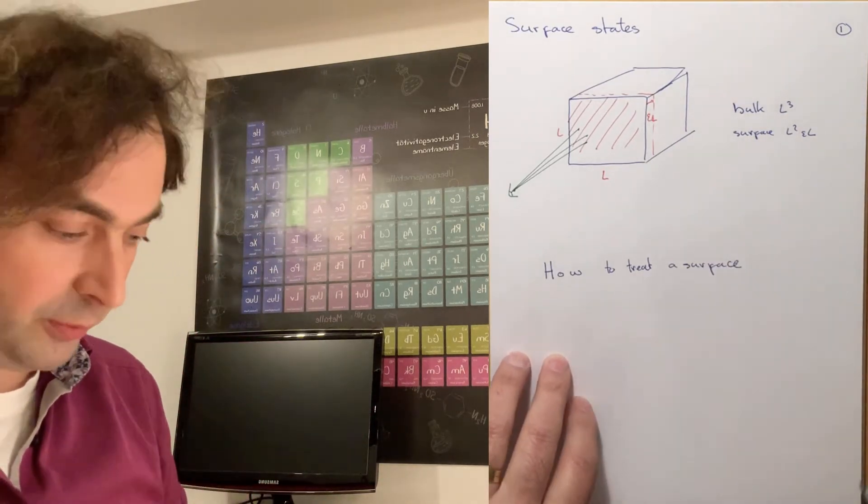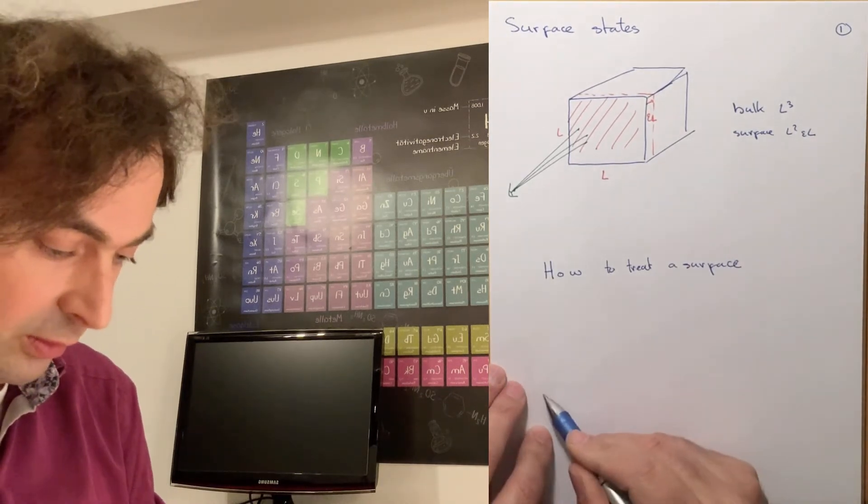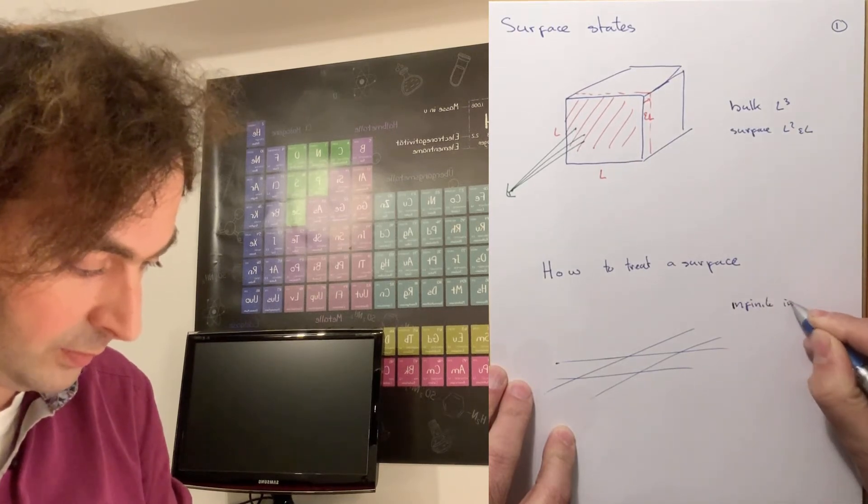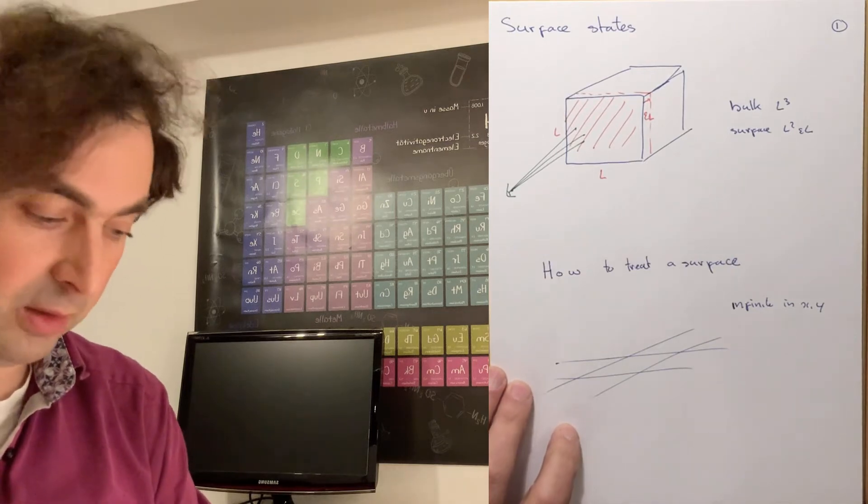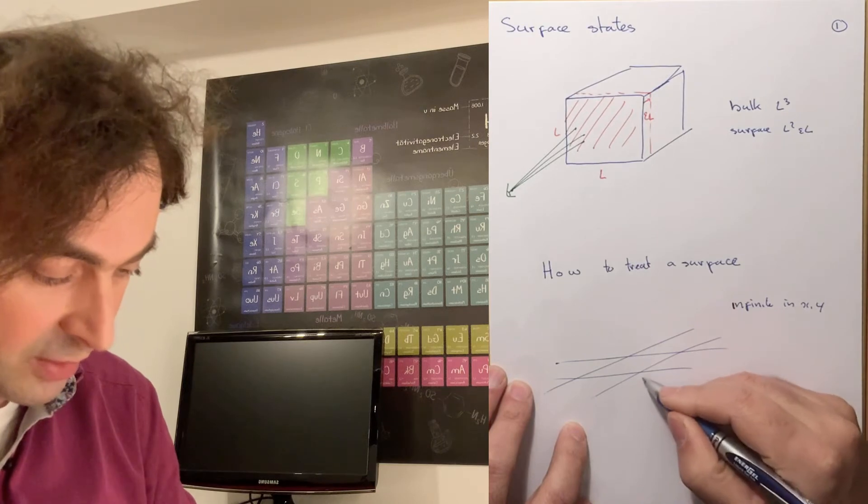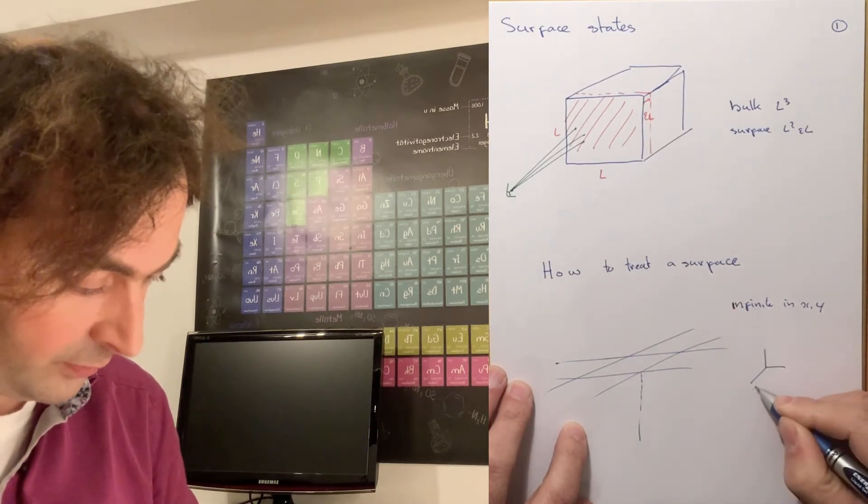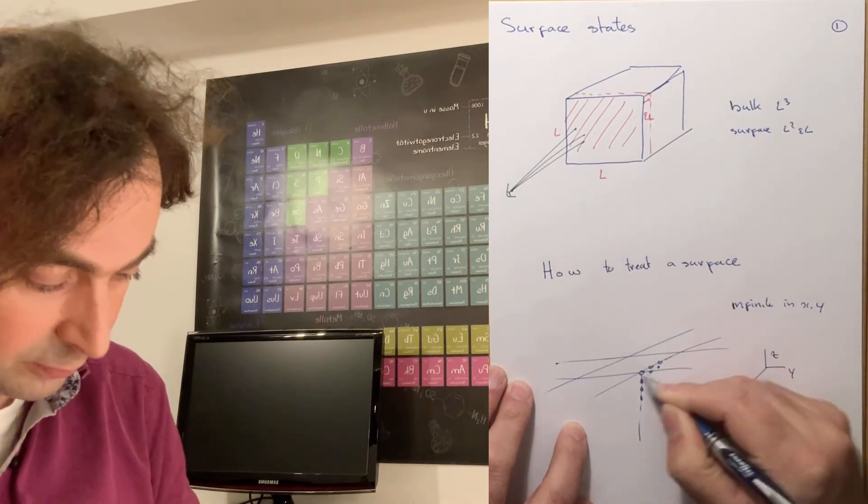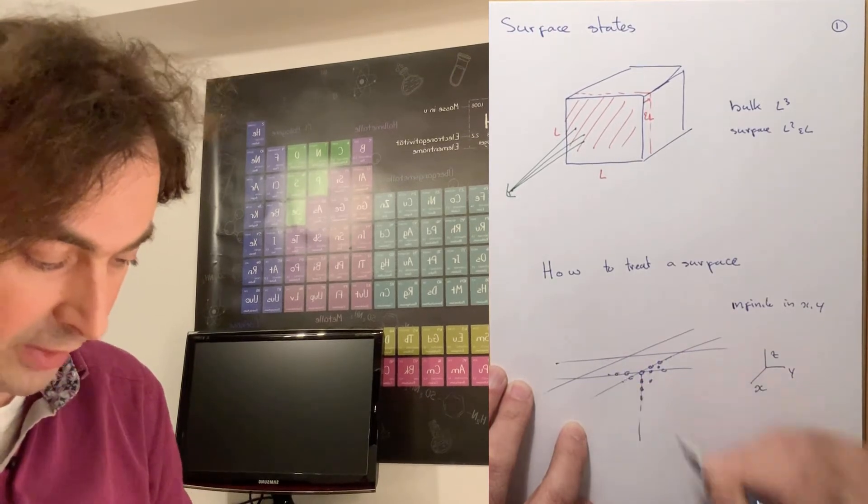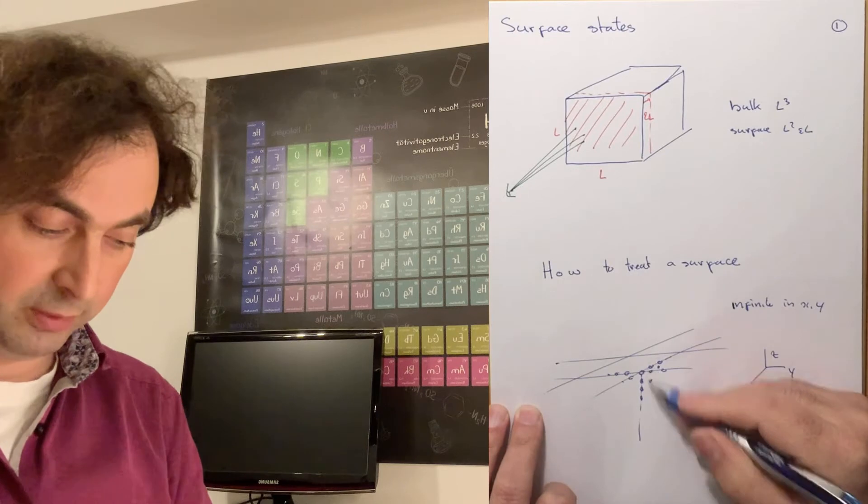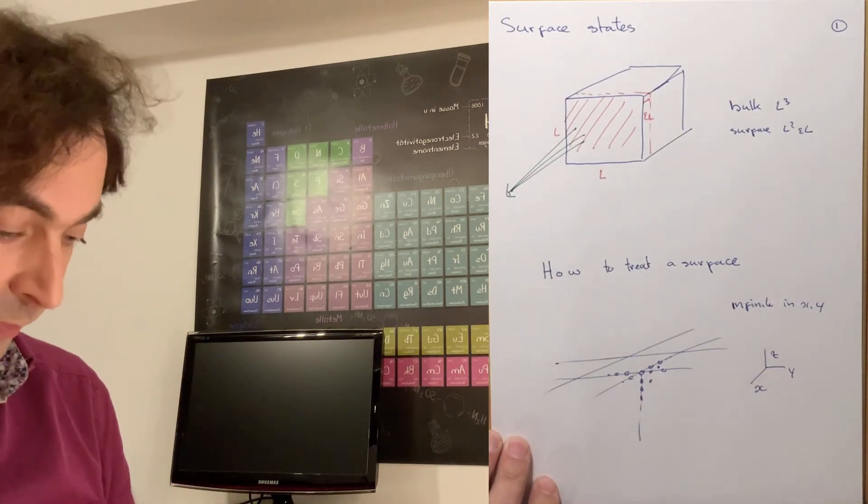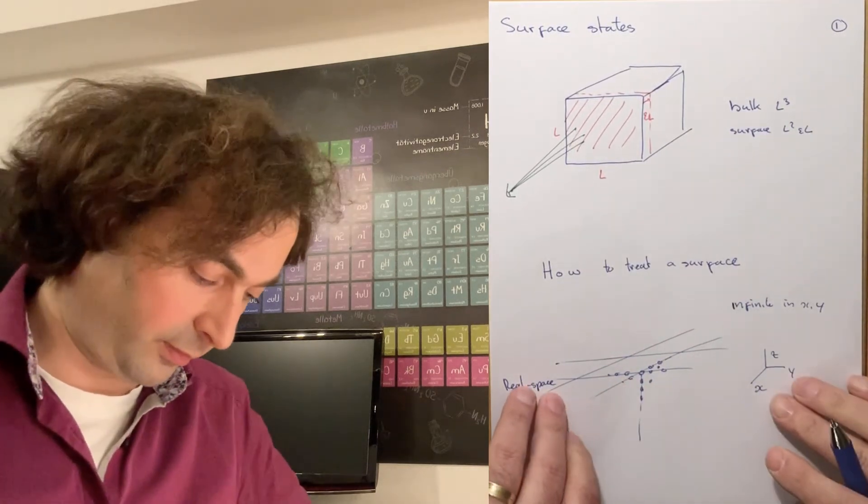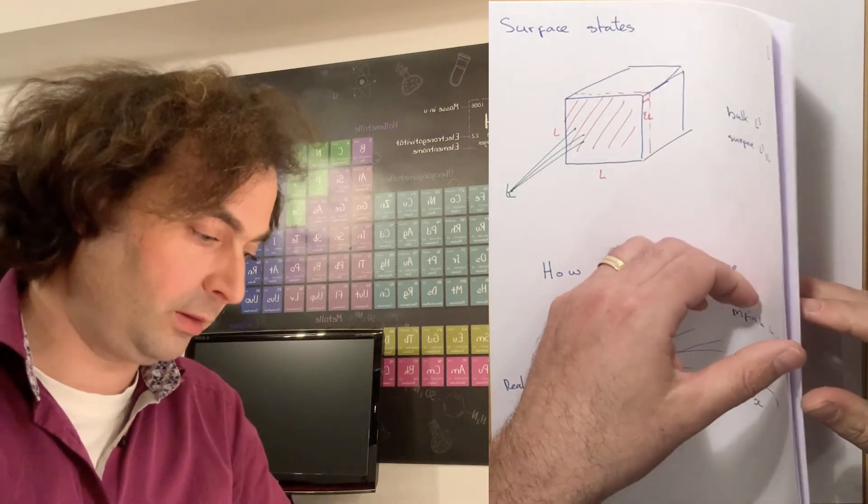If we want to treat a surface, we can look at a semi-infinite crystal, where for the x and y direction we take infinite crystals, which also means that for the x and y direction we can use the crystal momentum. And we make a semi-infinite crystal in the z direction. So we have our coordinates x, y, z, and the atoms go to plus and minus infinity in the x and y direction, but only from zero to minus infinity in the z direction. This is a real space picture.